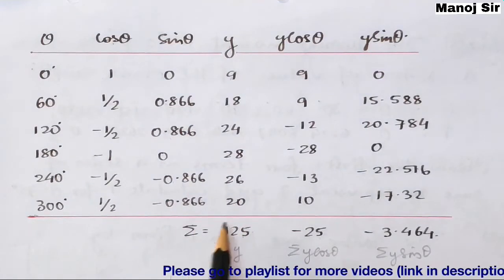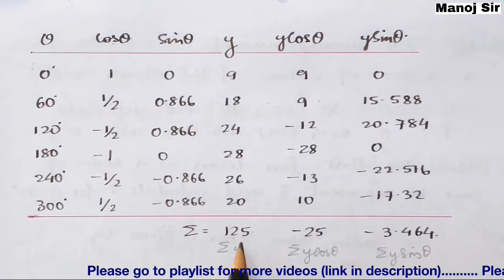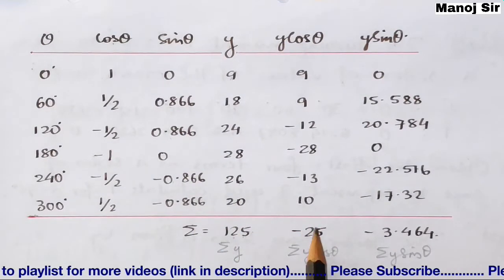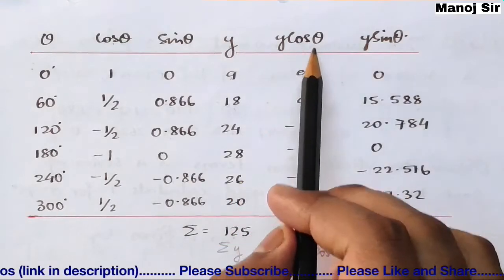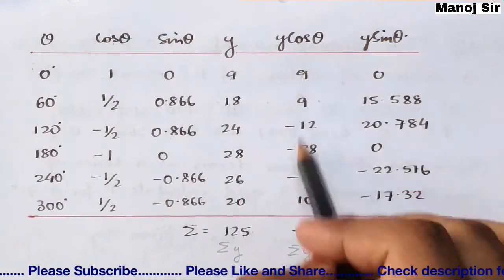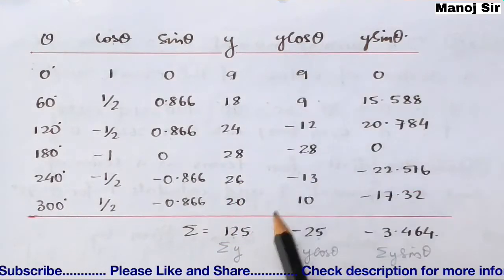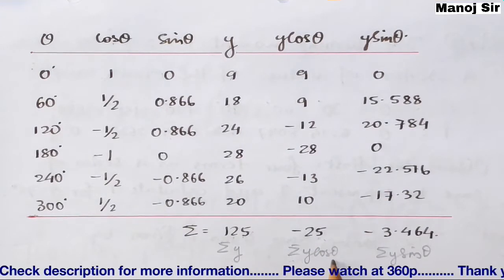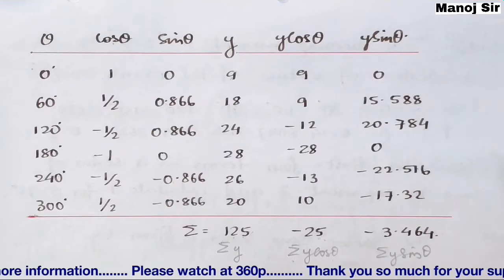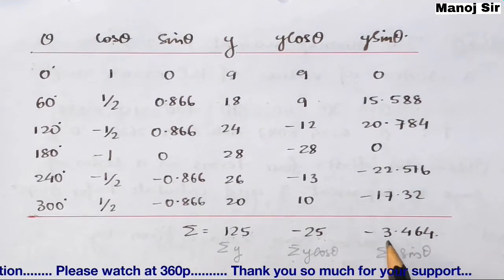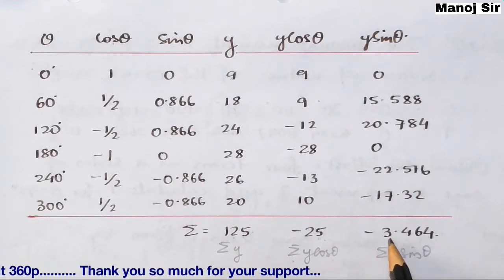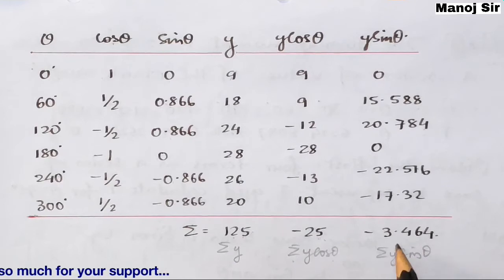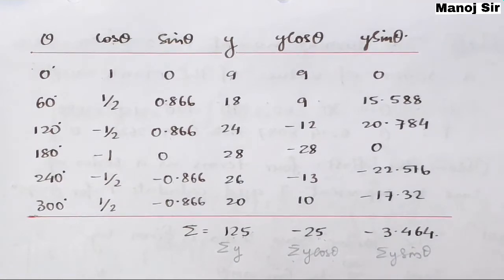Summing all values: Σy = 125, Σ(y cosθ) = −25, and Σ(y sinθ) = −3.464.